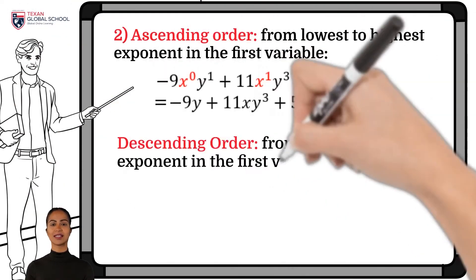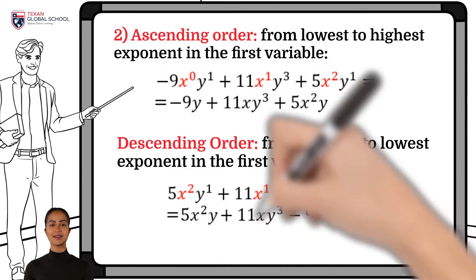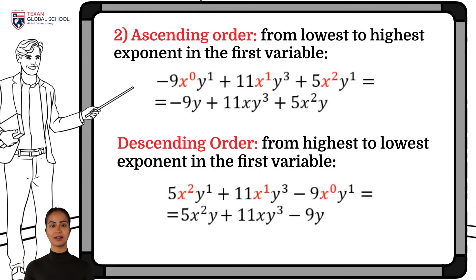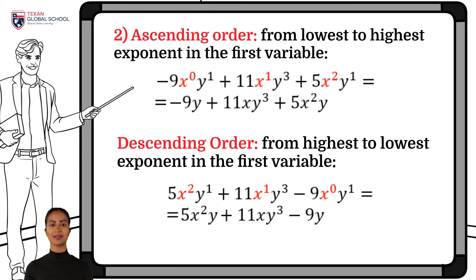We will start by sorting in ascending order — that is, from lowest to highest exponent in the first variable. The first term would have the variable x with exponent 0, or that term without variable x. Then comes the term with x raised to the first power, and finally the term with x squared. In this way, the polynomial is ordered in ascending order as the exponents increase.